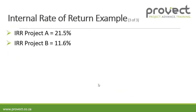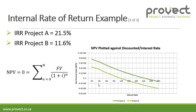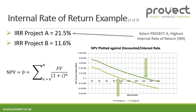For this example, the internal rate of return for project A is 21.5% and for project B is 11.6%. We can also plot the net present value against the discounted rate. From the plot, project A cuts the 0 line at 21.5% and project B cuts the 0 line at 11.6%. We will select project A, which has the highest rate of return.